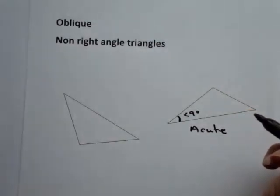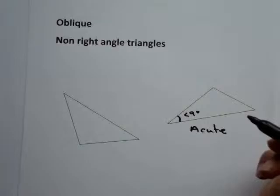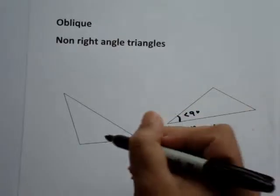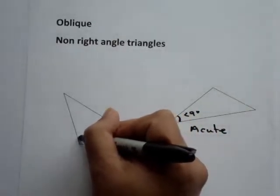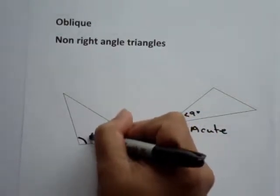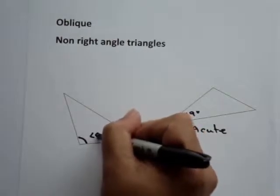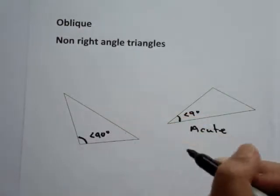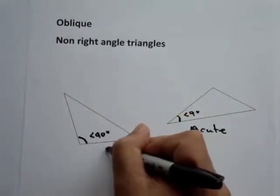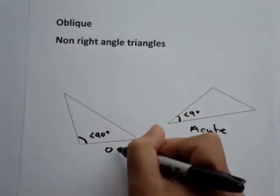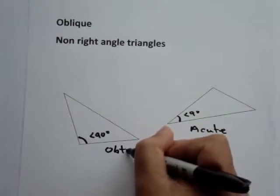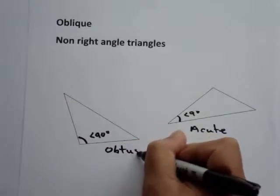And we can also have obtuse oblique, where the angle is greater than 90 degrees. So this is an oblique obtuse triangle.